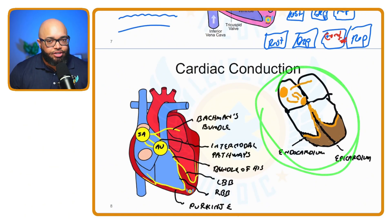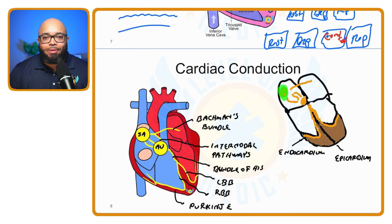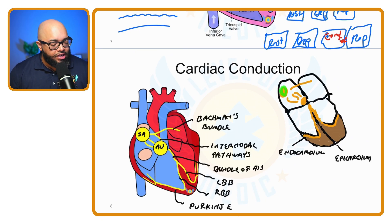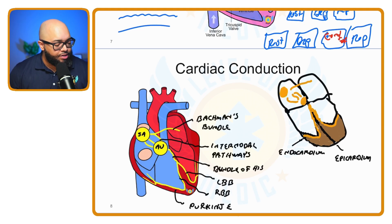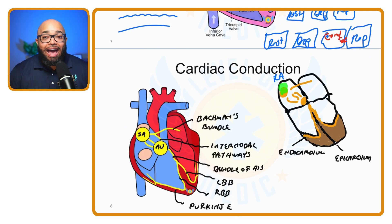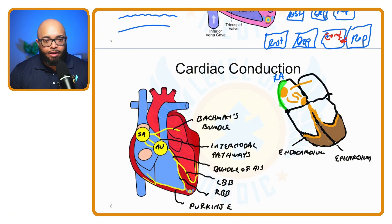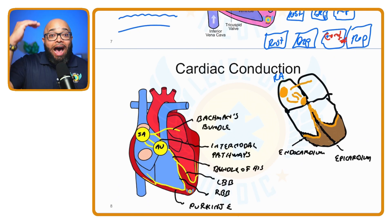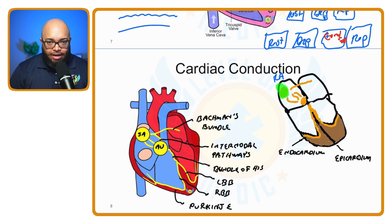When it comes to cardiac conduction, the chief pacemaker is called the SA node — the sinoatrial node. The SA node is situated high in the right atrium along the back wall, so it's superior-posterior in the right atrium.